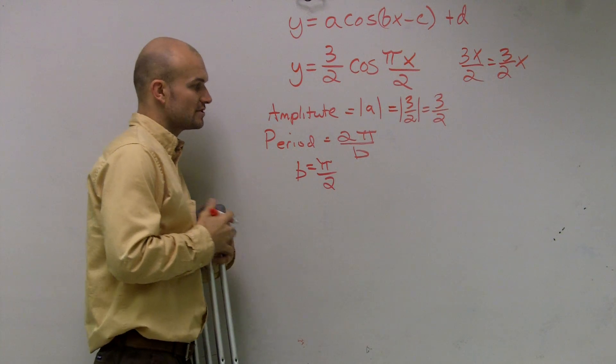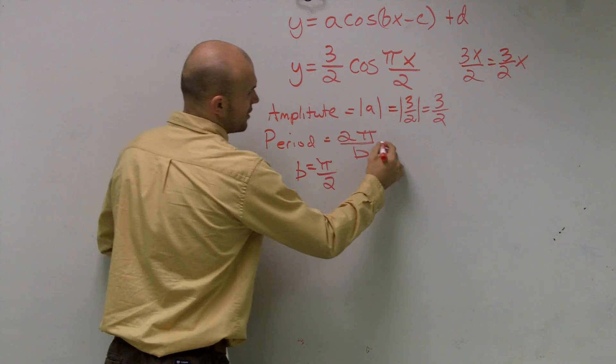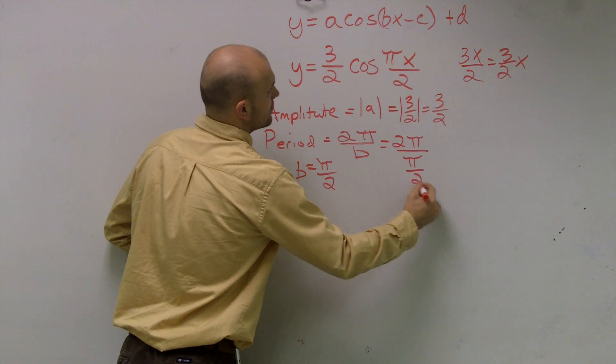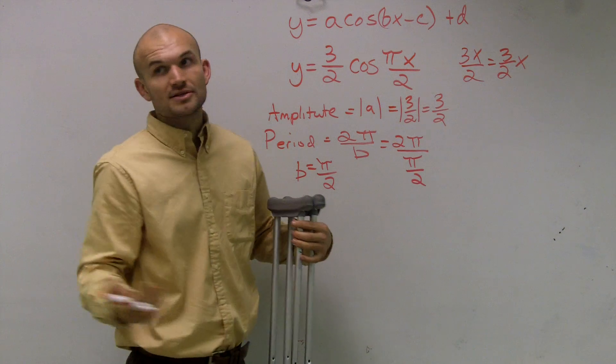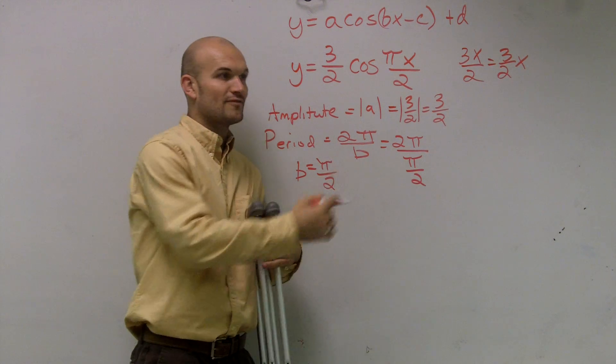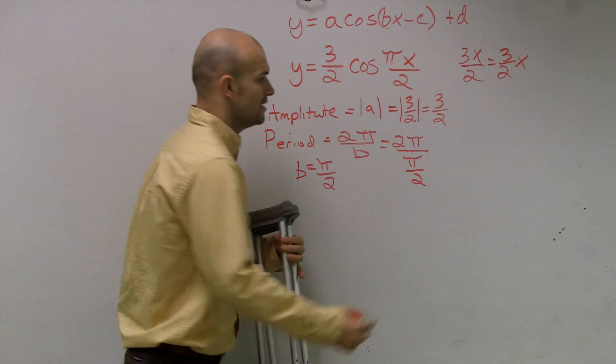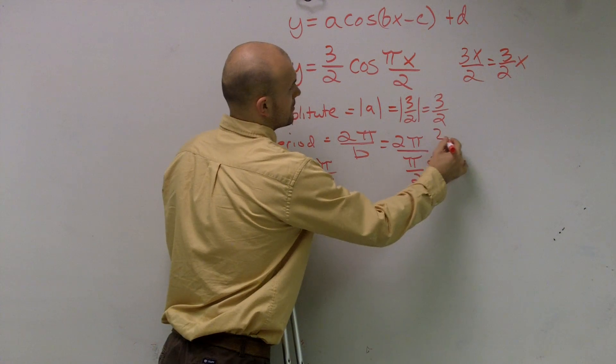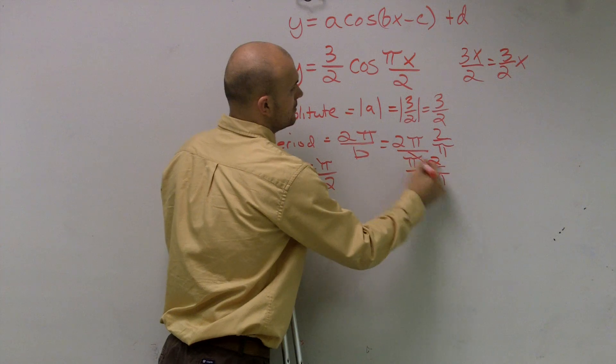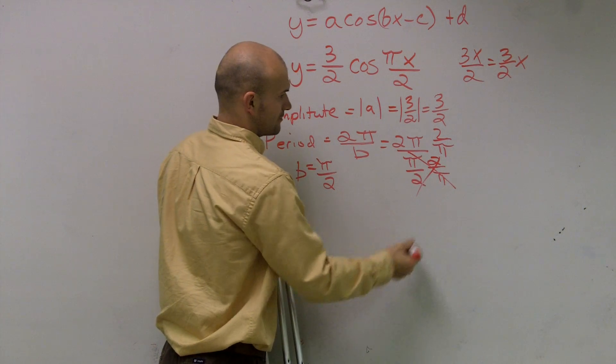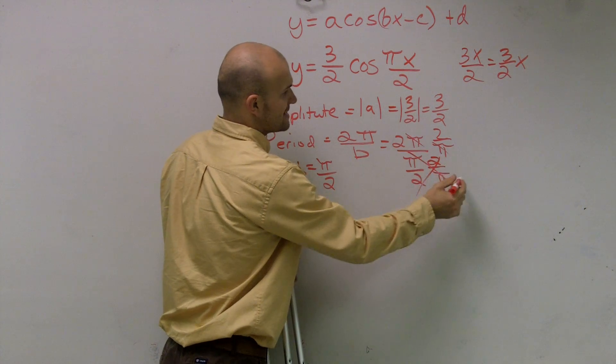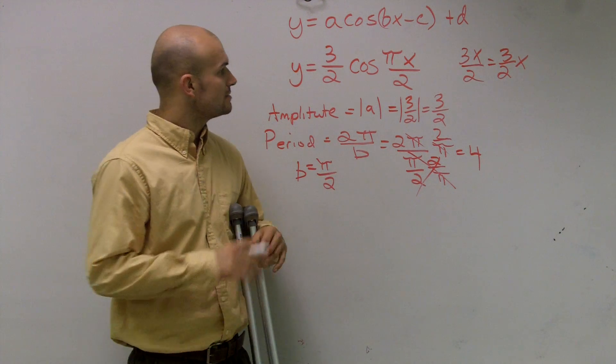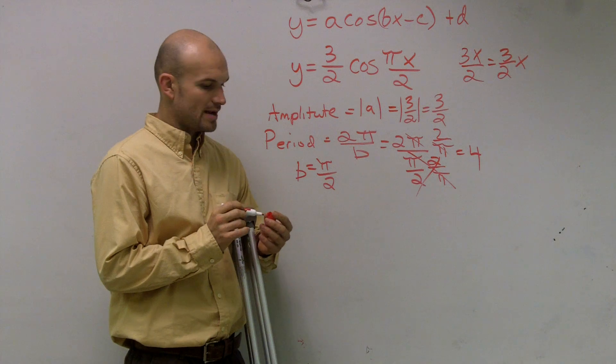So my B is π over 2 for this equation. When I solve this out, I have 2π over π over 2. And what we spent so much time with, remember when we had a fraction over a fraction? We need to multiply by the reciprocal. That cancels to 1, and here my π's cancel out. Now I'll just be left with 4. And that is your period and your amplitude for that equation.